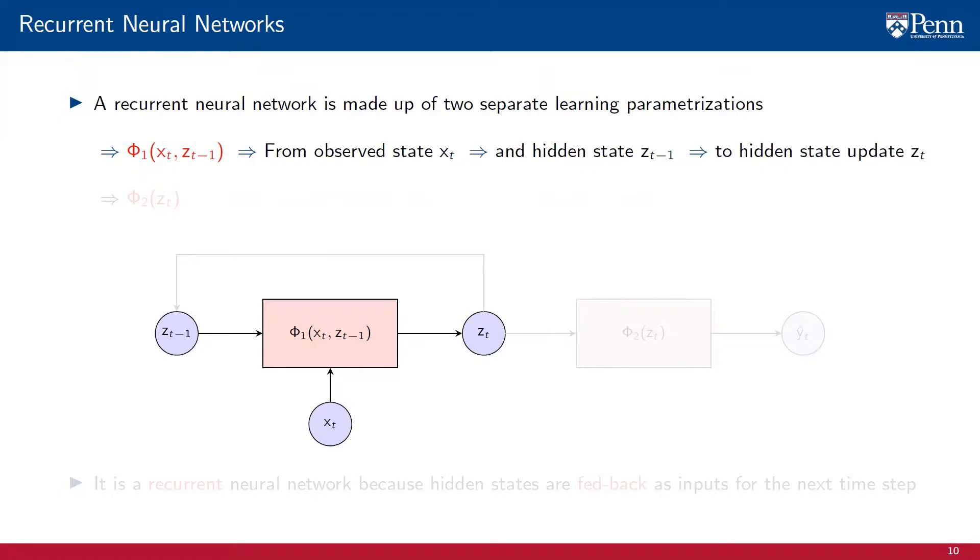Thus, at every time instant, the RNN updates its internal hidden state based on the received observation xt and on the previous value of the hidden state zt-1.